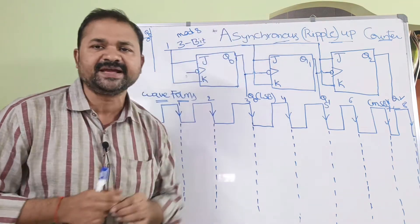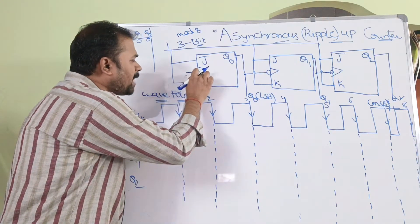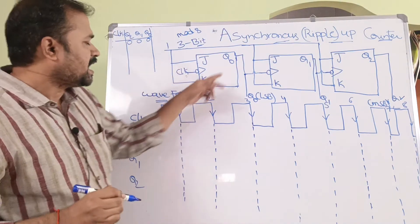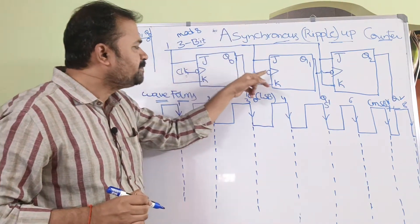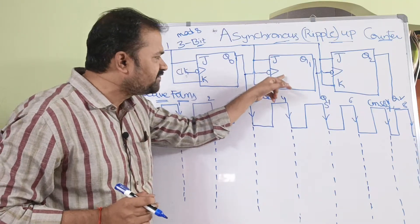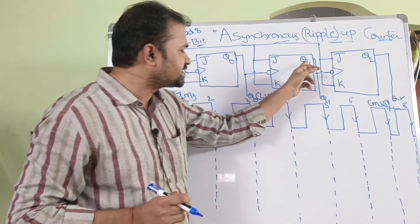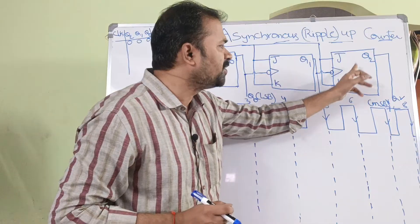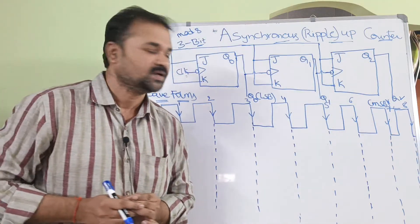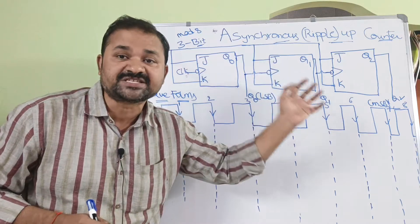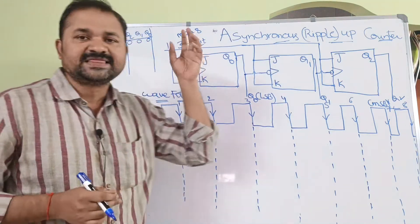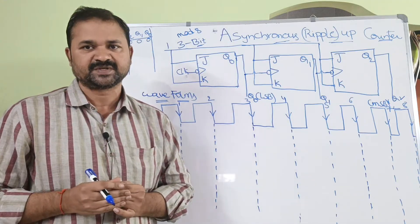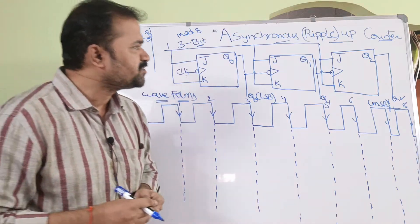Asynchronous counter means the clock pulse will be applied to the first flip-flop. The output of the first flip-flop will be connected as clock pulse to the second flip-flop. Likewise, the output of the second flip-flop will be connected as clock pulse to the third flip-flop. This is called an asynchronous counter because the flip-flops are not driven by the same clock pulse.